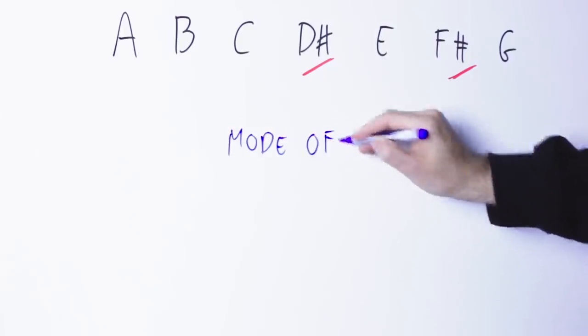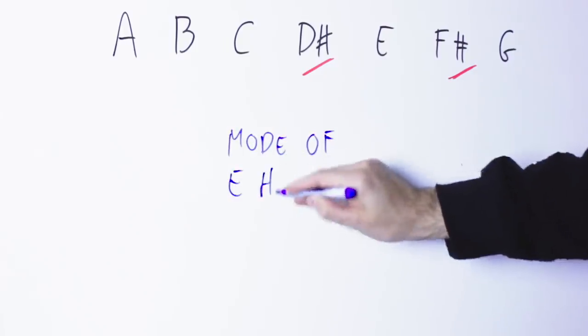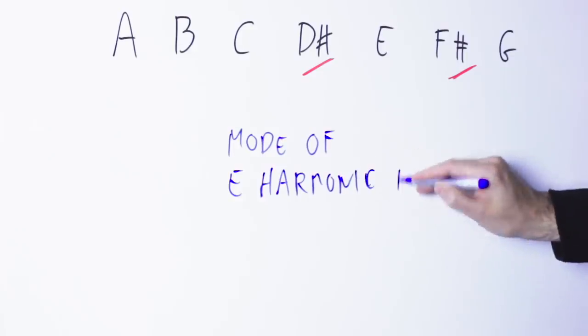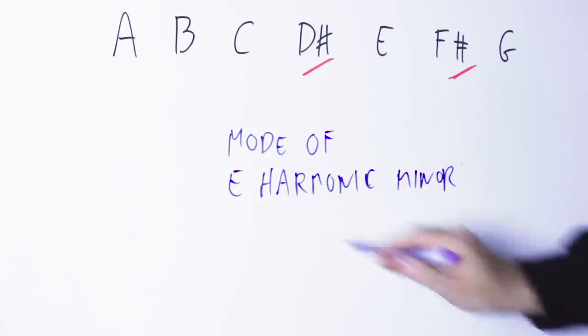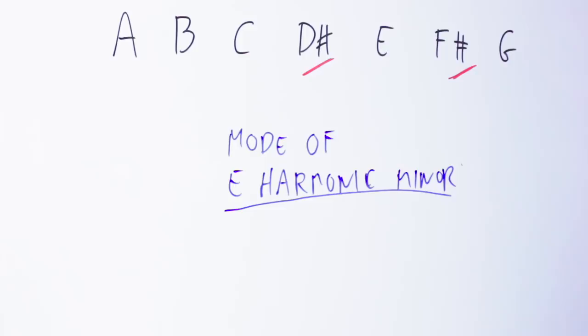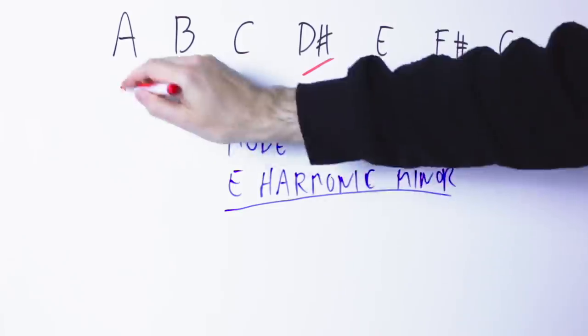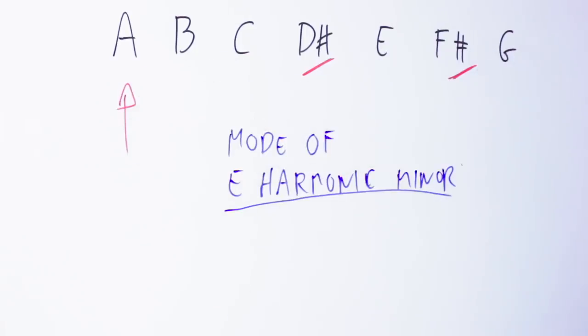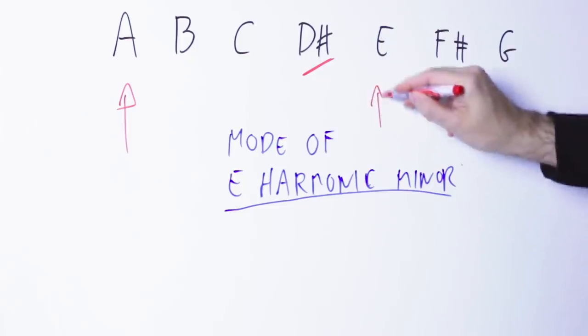This scale is a mode of the harmonic minor scale, specifically the A Dorian sharp fourth has the same note as the E harmonic minor. This is important to know because we want to make sure that you hear A as the tonic of the scale and not E.